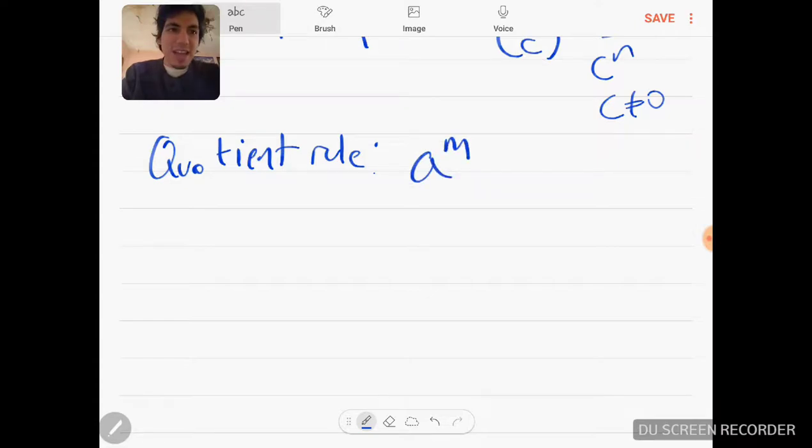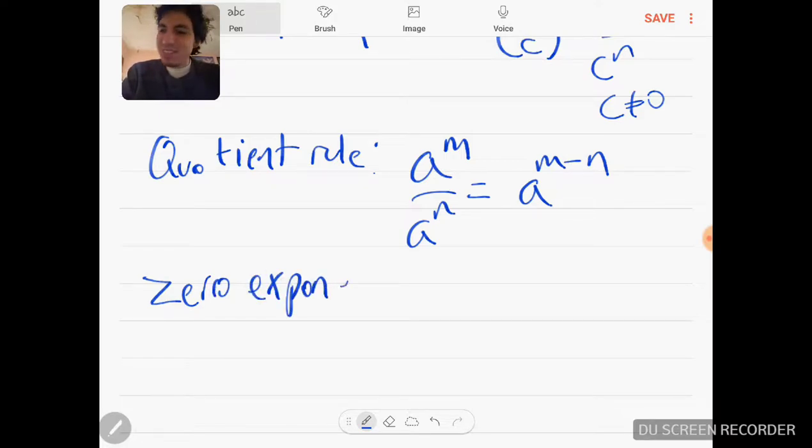Quotient rule is going to be a to the M over a to the N, and you take the difference of the exponents. This is the penultimate—I said that word wrong—but it's the second to last thing. We're almost done with zero exponent, where a to the zero equals one, as long as a is not equal to zero.